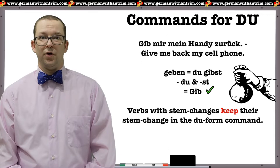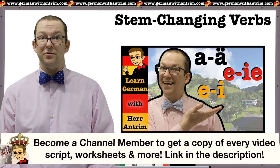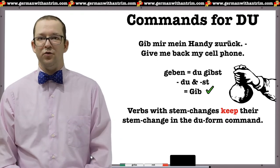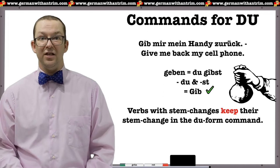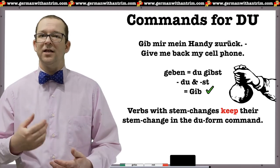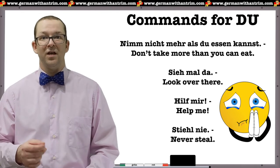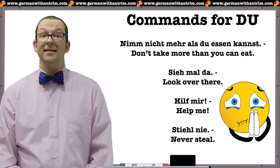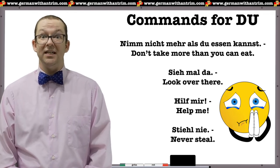In the example Gib mir mein Handy zurück, I showed how to use a stem-changing verb in the command form. If you know stem-changing verbs, you'll know the Du form is affected by this change. Verbs like geben become gibst in the Du form, so the Du command is gib. The same applies to iss and lies. If there is a stem change in the present tense Du form, keep that stem change in the command. Don't forget that nehmen becomes nimmst for Du, so the command is nimm. More examples: Nimm nicht mehr als du essen kannst — don't take more than you can eat. Sieh mal da — look over there. Hilf mir — help me. Stiehl nie — never steal.